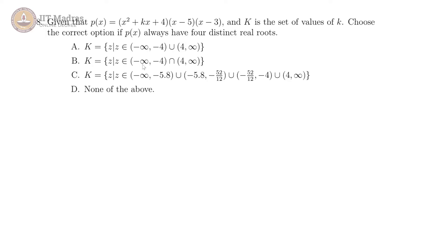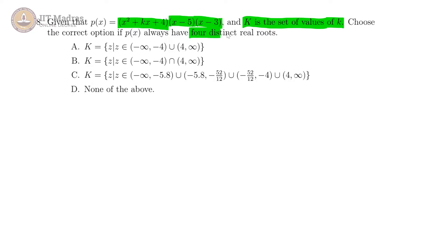Question 8 is very closely related to Question 7. We again have the same quadratic into monomial, the same polynomial, and the same set is given to us. Now we have to find the correct option for p(x) to have 4 distinct real roots — meaning the roots should not be equal to each other, and that is the catch.